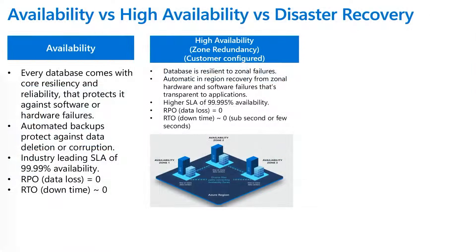Jumping to the next pillar, which is high availability: one of the key points we want to send across is this is something that has to be configured by the customer. What we mean by customer-configured high availability is you turn on zone redundancy. In this case, the database becomes resilient to zonal failures. Each region has multiple zones and each zone has multiple data centers. So in the event something is impacting one data center, your database will still be resilient. These failovers are transparent to applications — the application won't even know as long as it's retrying. With zone redundancy, we go one level higher from four nines to four nines and a five. We have multiple replicas, so we are able to guarantee high availability. Same goes with RPO: no data loss. Recovery time objective is not quite zero, but often sub-second or a few seconds depending on the service tier.